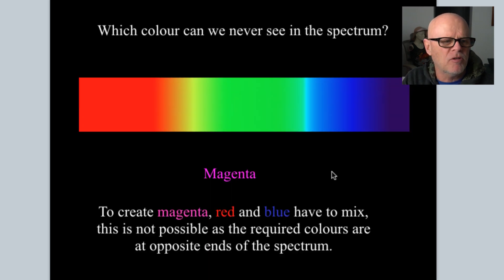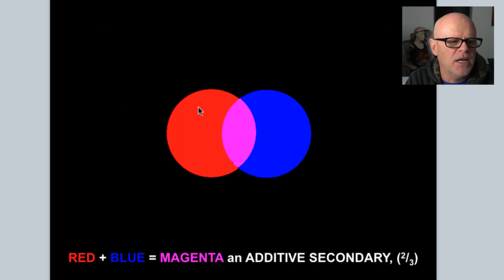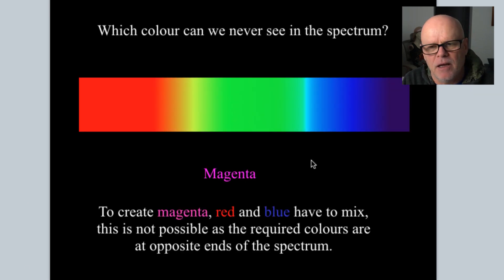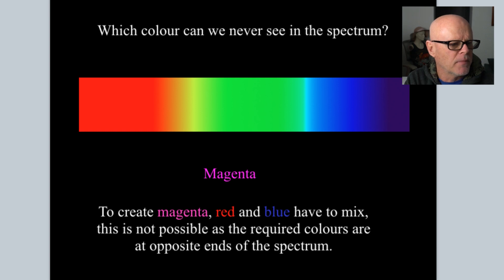There's one colour that's not in the spectrum, and that's magenta. You can't see magenta in the spectrum at all — you'll never see it in a rainbow. Because to make magenta, the two colours you need to mix are red and blue. On a rainbow, red and blue are at opposite ends of the spectrum and can't mix, so you can't see magenta in the spectrum. I just thought that'd give you an interesting insight.